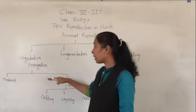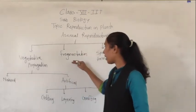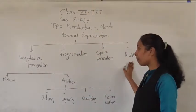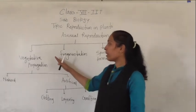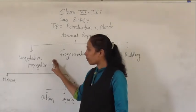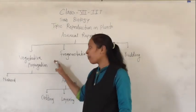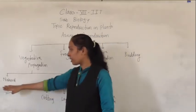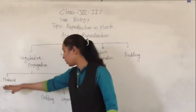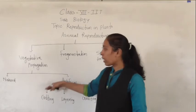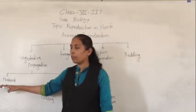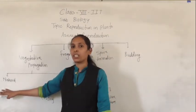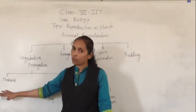The asexual methods of reproduction include vegetative propagation, fragmentation, spore formation, and budding. We were discussing vegetative propagation, which is divided into two parts: natural and artificial. About the natural methods of vegetative propagation, we have already discussed in our previous video.